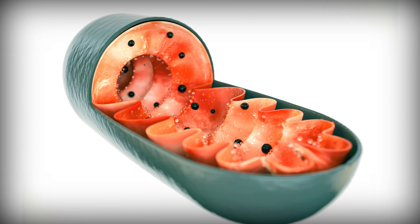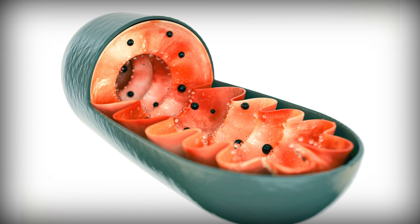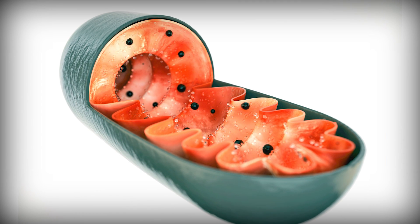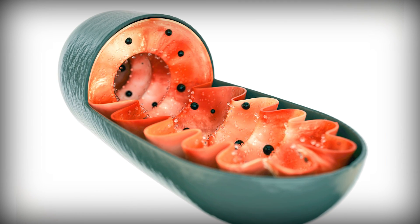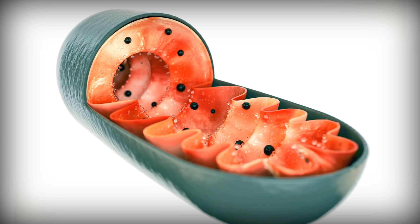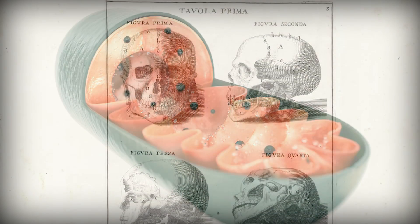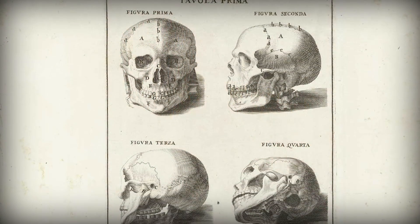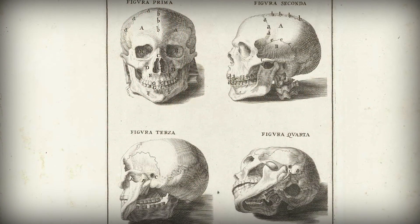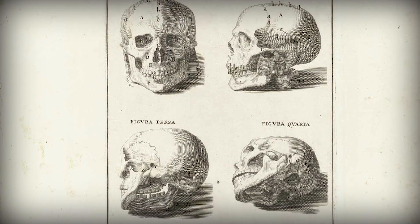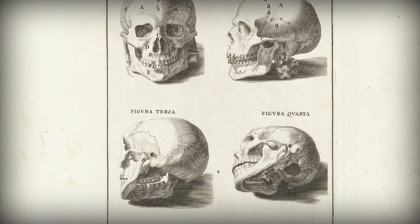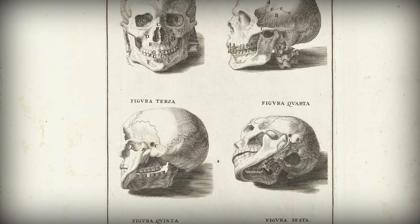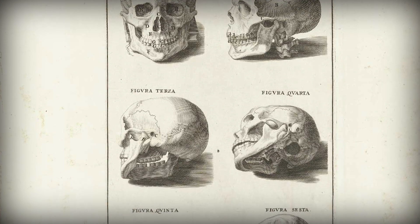In fact, studies of human mitochondrial DNA — the small amount of DNA that exists outside of the nucleus of a cell — have concluded that the ancestry of every human alive today goes back to a single common ancestor from around this time.